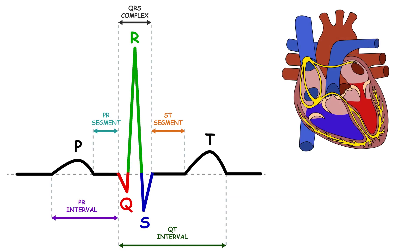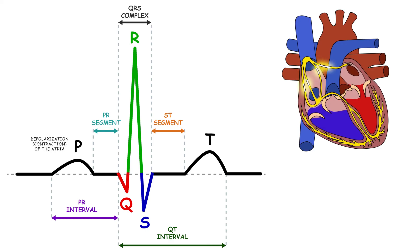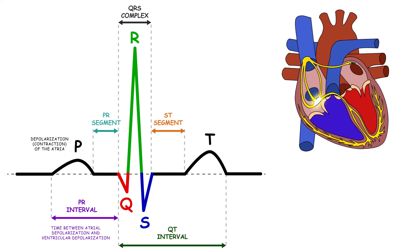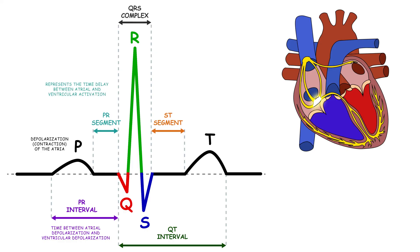First, there's the P wave, a small upward deflection that represents the depolarization, and hence the contraction, of the atria. Next, there's the PR interval, which is the time between the beginning of the P wave and the beginning of the QRS complex. The PR segment is the flatline between the end of the P wave and the start of the QRS complex, representing the time delay between atrial and ventricular activation.